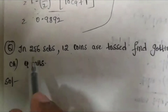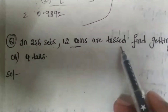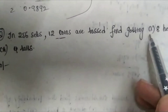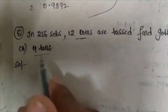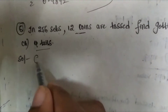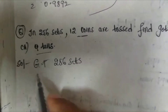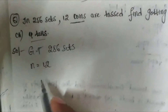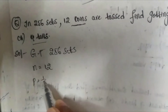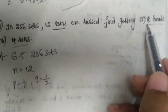Let us consider another problem. In 256 sets, 12 coins are tossed. Find the probability of getting: first, 8 heads, and second, 4 tails. Given N = 12 coins. If we toss a coin, we get P = 1/2 and Q = 1/2.